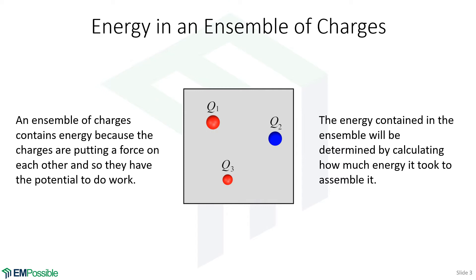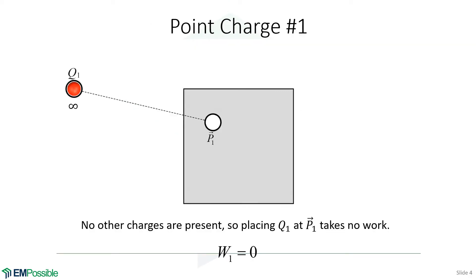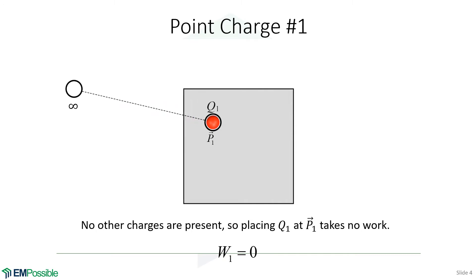One thing we can do is move these charges out to infinity and calculate how much energy it takes to assemble them into their current arrangement. That will equal the energy stored. So the first thing we'll do is take the first charge and move it from infinity to point P1. There are no other charges present, so there's nothing to attract or repel it. It takes zero work to move that first charge in from infinity.